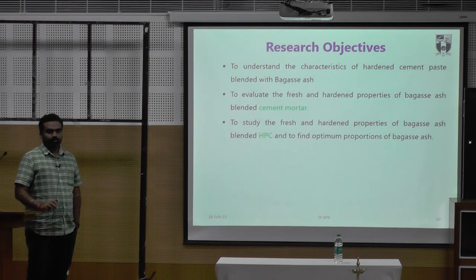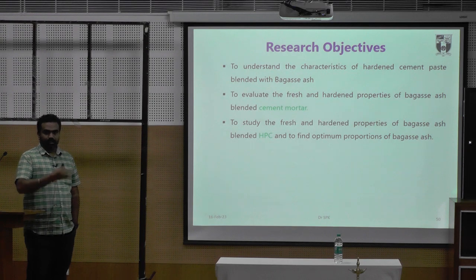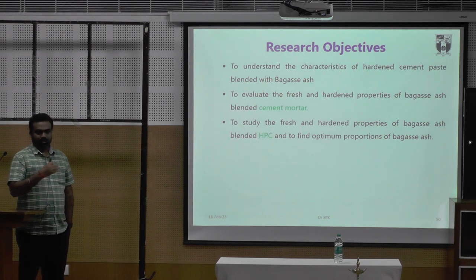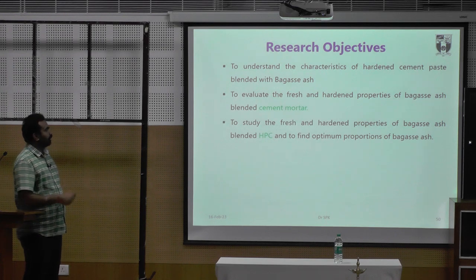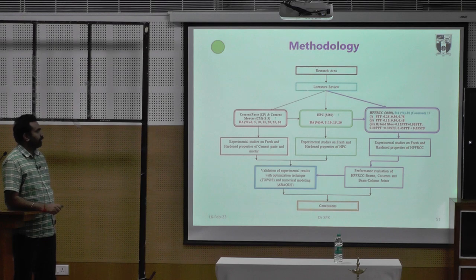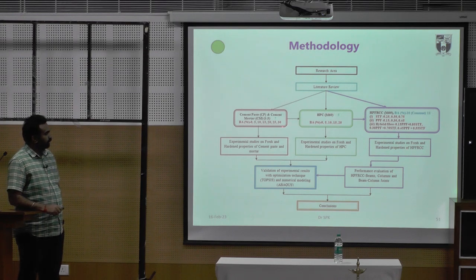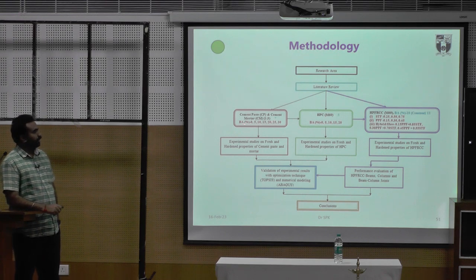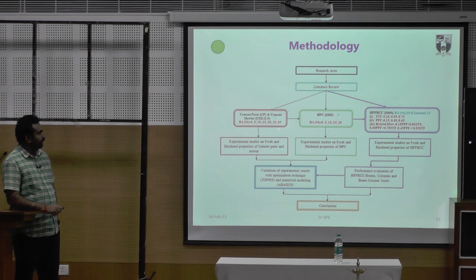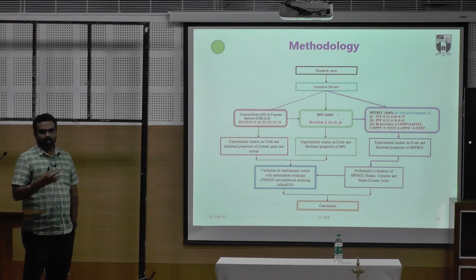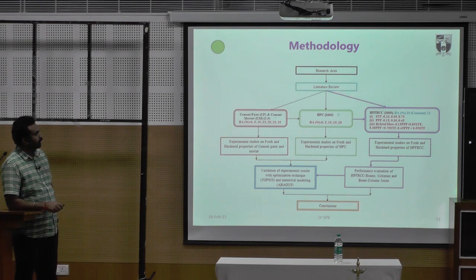How to start working? We cannot directly go for conventional concrete with replacements. So we started with cement paste, then cement mortar, then concrete, and finally high performance concrete. We have also tried steel fiber and polypropylene fiber. Based on the literature review, we identified proportions from 0 to 30 percent — a total of 7 proportions — with a mortar mixture ratio of 1:3. After experimental work, we concluded that 30 and 25 percent are not giving enhanced durability or strength properties, so in the HPC stage we removed those proportions.